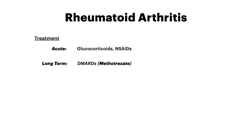Know the differences: OA versus RA. OA equals inflammation due to overuse in somebody with risk factors. RA equals autoimmune inflammation in somebody with more of an autoimmune profile.